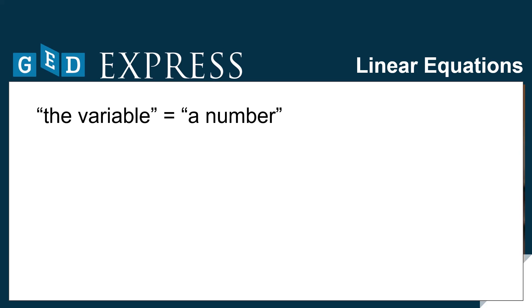With one-step equations, only one operation is being done to the variable. This means that it takes only one step to undo this operation and get the final answer, the variable by itself.